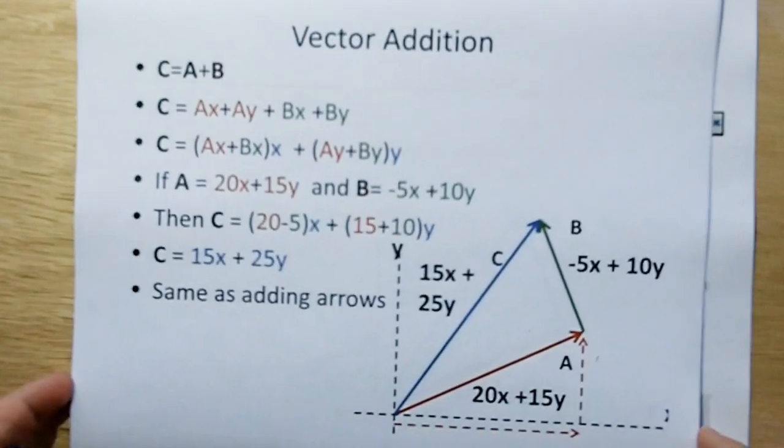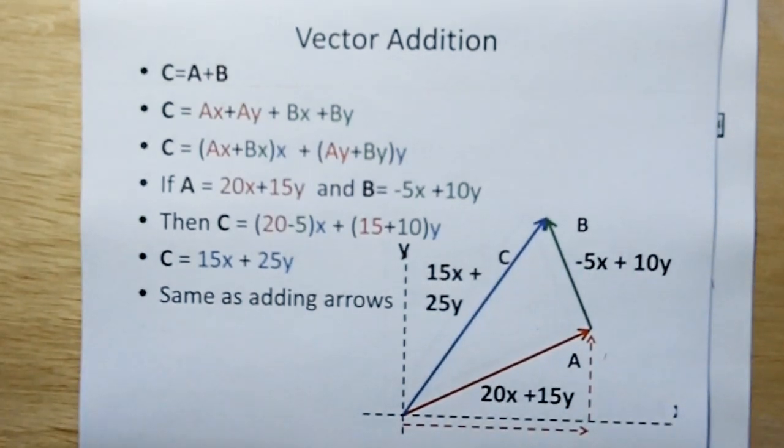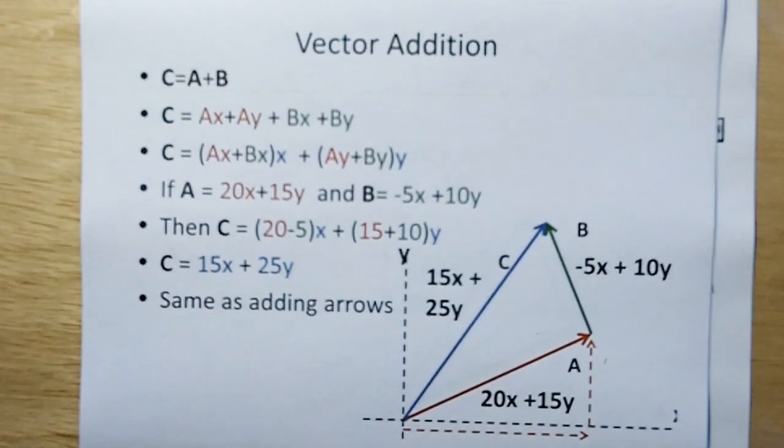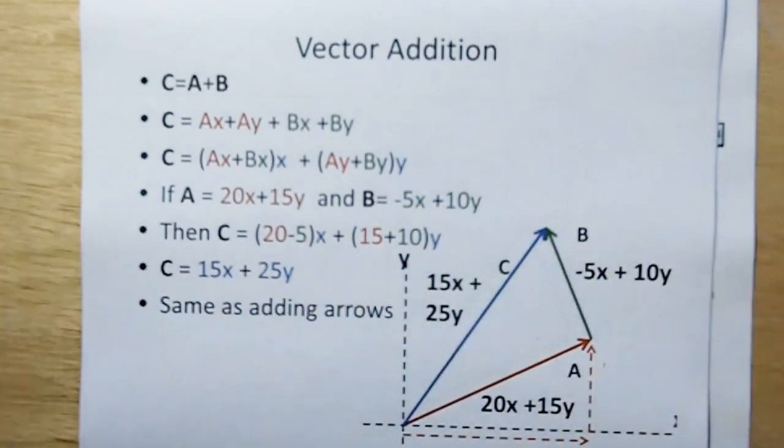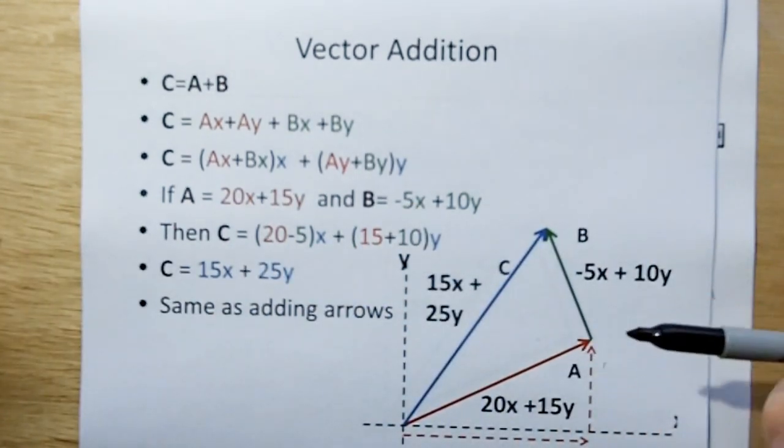So let's go back. This is a repeat of what we've done before. This is classical vector addition, which doesn't change when we get to Q vectors, by the way. So we say that vector C is a summation of vector A plus B, and I've color coded this from the last time, where this is A, B, and the resultant C will be in blue.